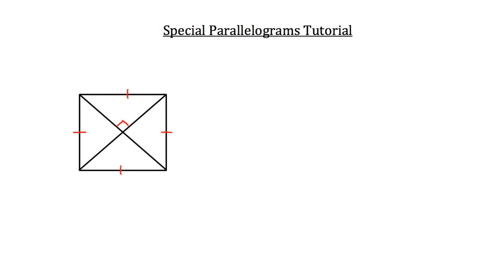Could you tell, based on just this information, if we're dealing with a square, a rhombus, or a rectangle? If you need to, pause the video and think about it, or even go back and review the properties of those three special parallelograms. The answer to this question is that we're dealing with a rhombus. The easiest way to tell is that we haven't indicated that any of the four interior angles are 90 degrees, so that eliminates rectangles and squares automatically.